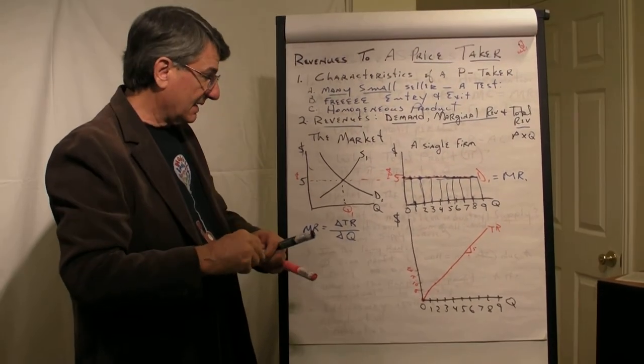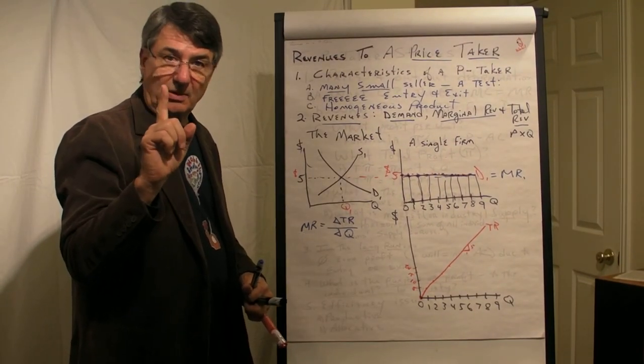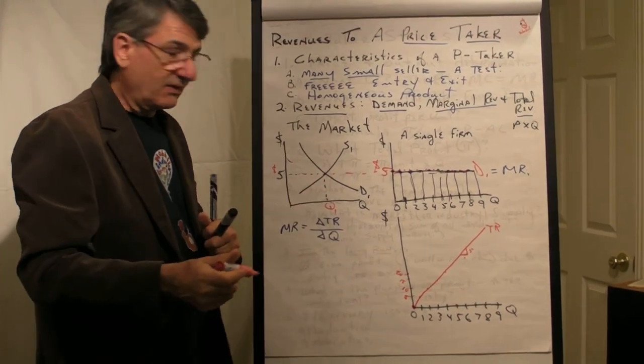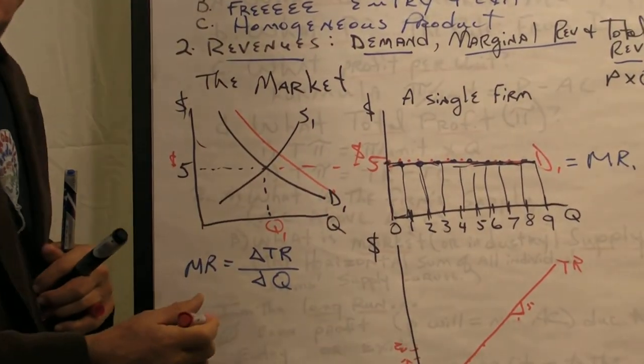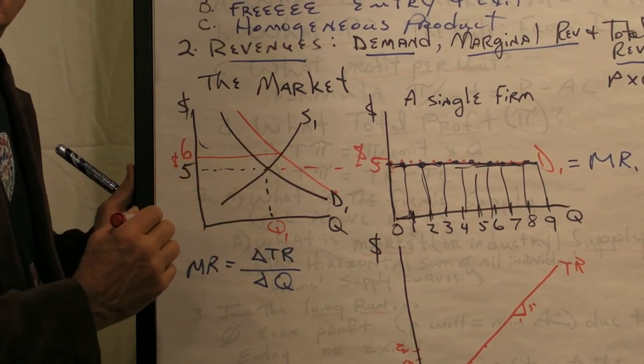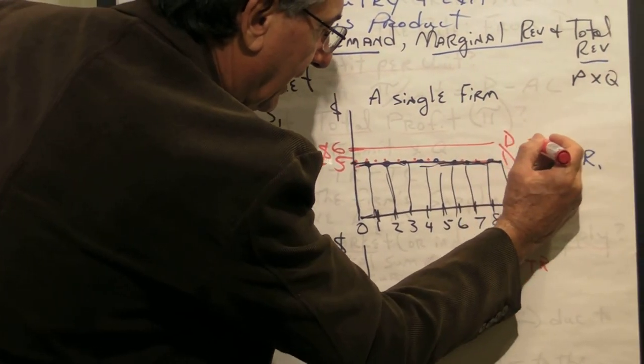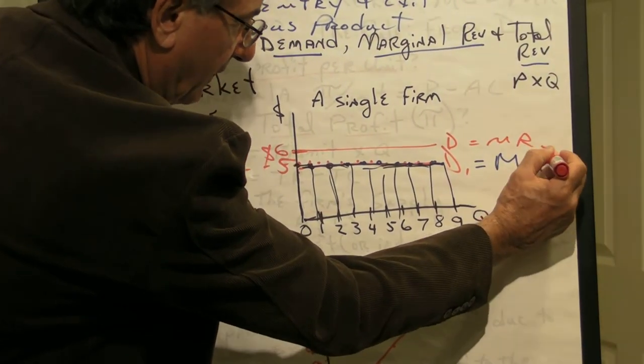Now, one last little bit, and that is, in the market, this price changes every day according to supply and demand changes. So what if the price goes to six dollars? Well, if the price is six dollars, this now becomes the new demand and marginal revenue curve to this firm.